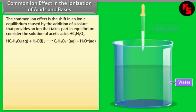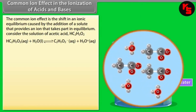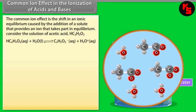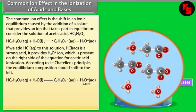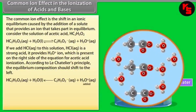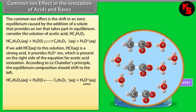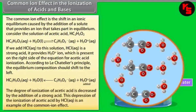Common Ion Effect in the Ionization of Acids and Bases. The common ion effect is the shift in an ionic equilibrium caused by the addition of a solute that provides an ion already participating in the equilibrium. For example, if HCl is added to a solution of acetic acid (HC₂H₃O₂), HCl provides H₃O⁺ ions. According to Le Chatelier's principle, the equilibrium shifts to the left and the degree of ionization of acetic acid decreases. This depression of the ionization of acetic acid by HCl is an example of the common ion effect.